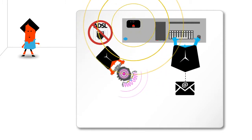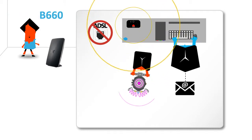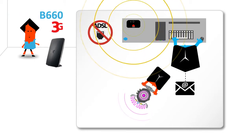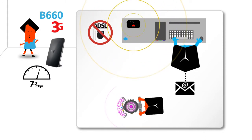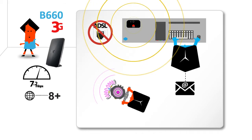That's why Dad uses the B660 3G router. With its built-in 3G modem, it's capable of an incredible download speed of 7.2 megabytes per second and can connect up to 30 devices via LAN and Wi-Fi.